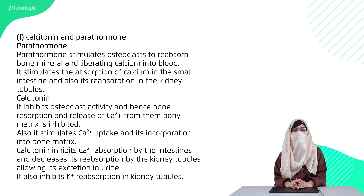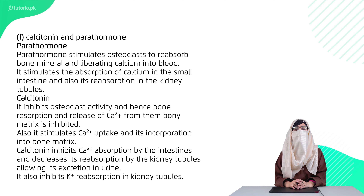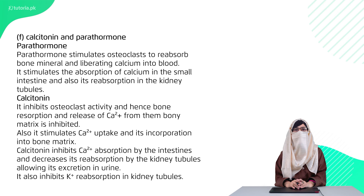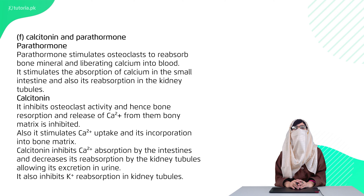The sixth difference: calcitonin versus parathormone. Calcitonin is the hormone released by the thyroid gland when blood calcium levels are high, to lower them. Parathormone is the hormone released when blood calcium levels are low, to raise them.